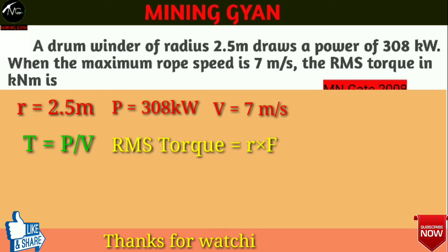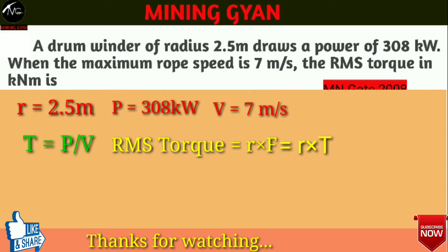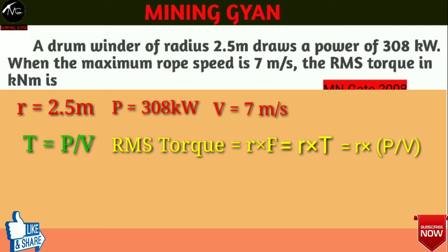अपने को ये भी पता है कि RMS torque is equal to R cross F। Winding rope के case में torque is equal to radius of drum winder cross tension in rope। अब T की जगह P/V रख देंगे, तो finally RMS torque is equal to R cross P by V। अब values पूट करते हैं: 2.5 multiplied by 308 divided by 7।